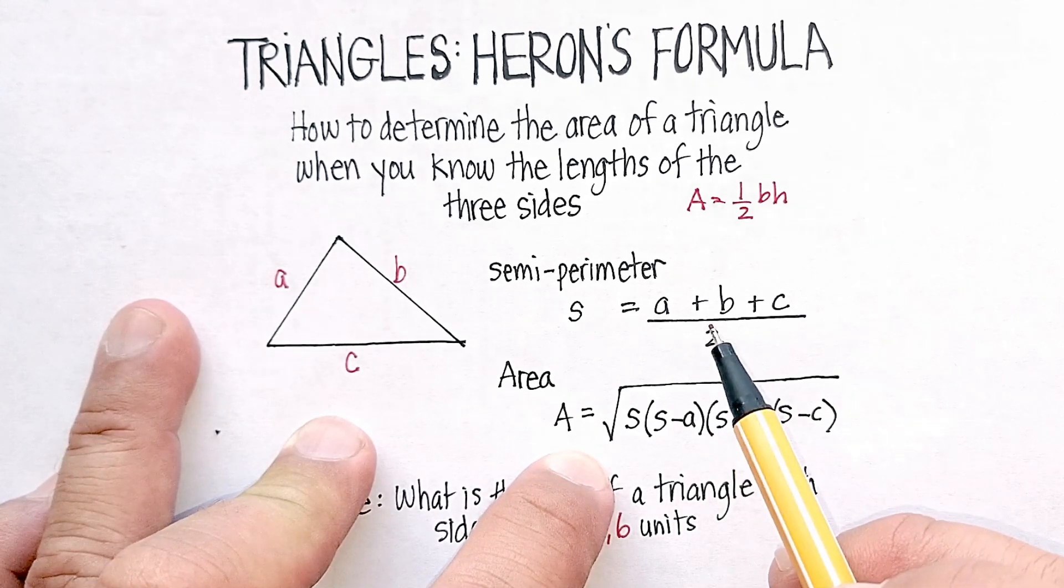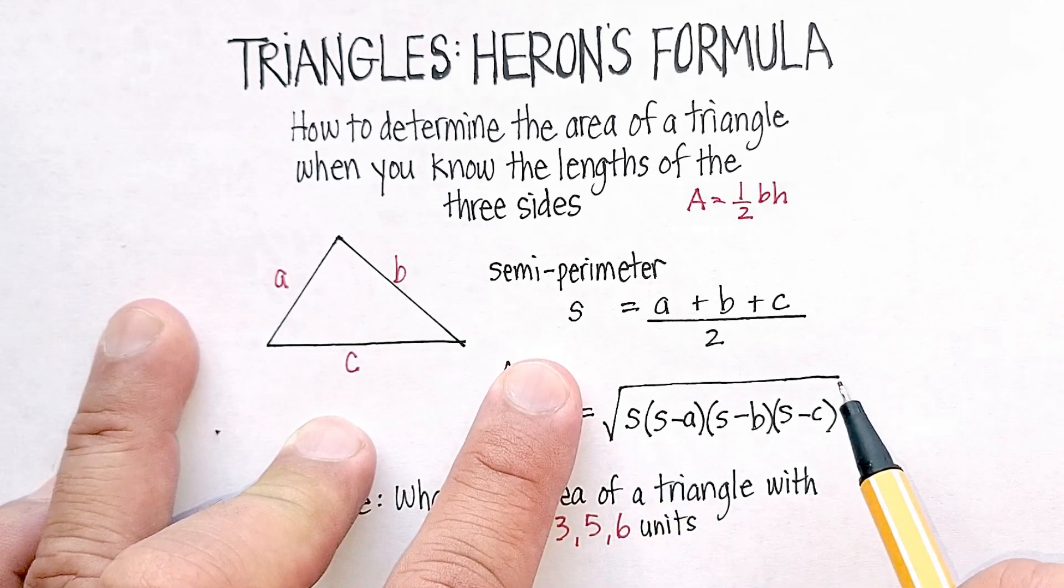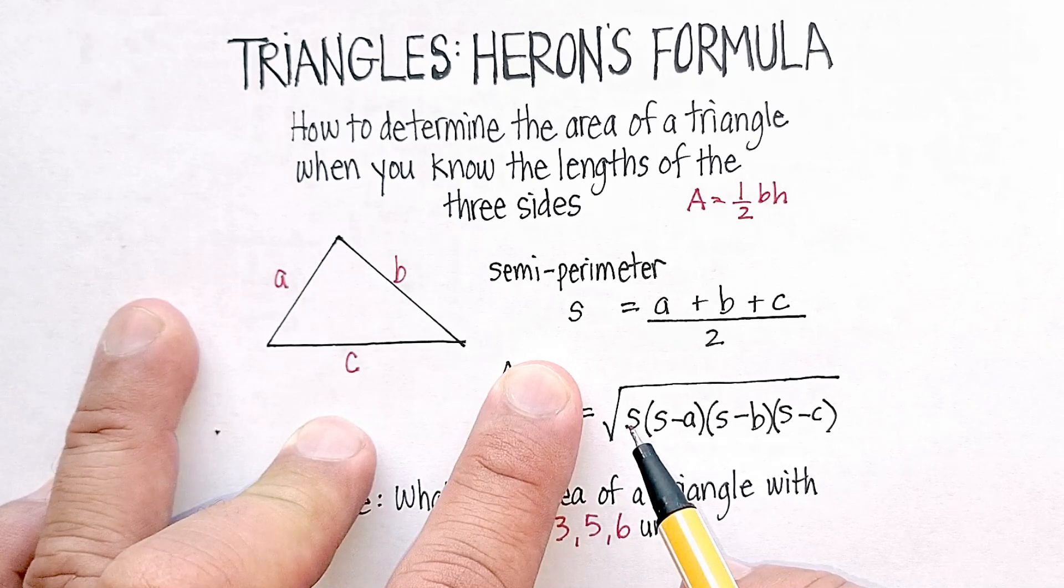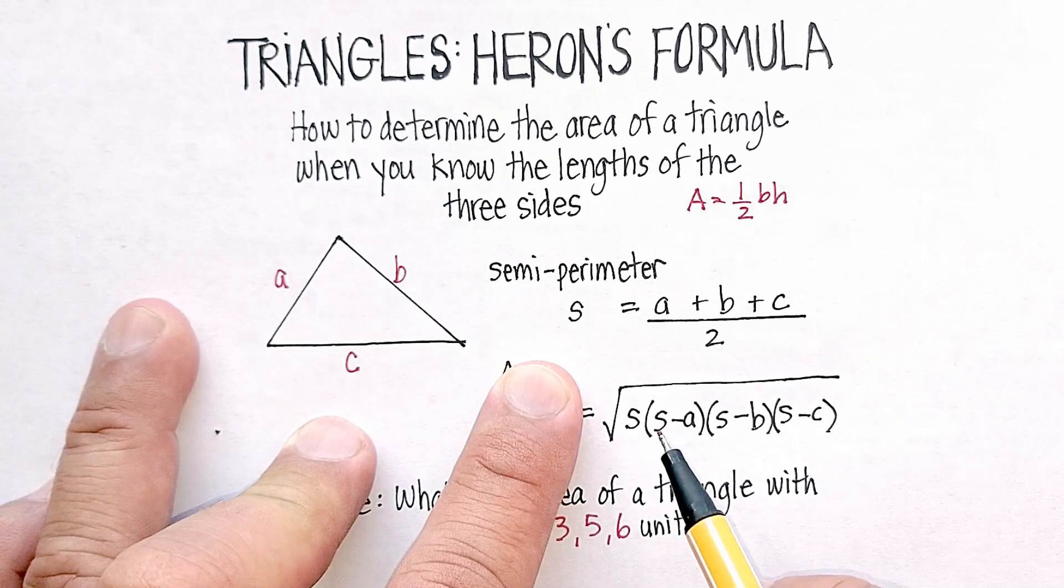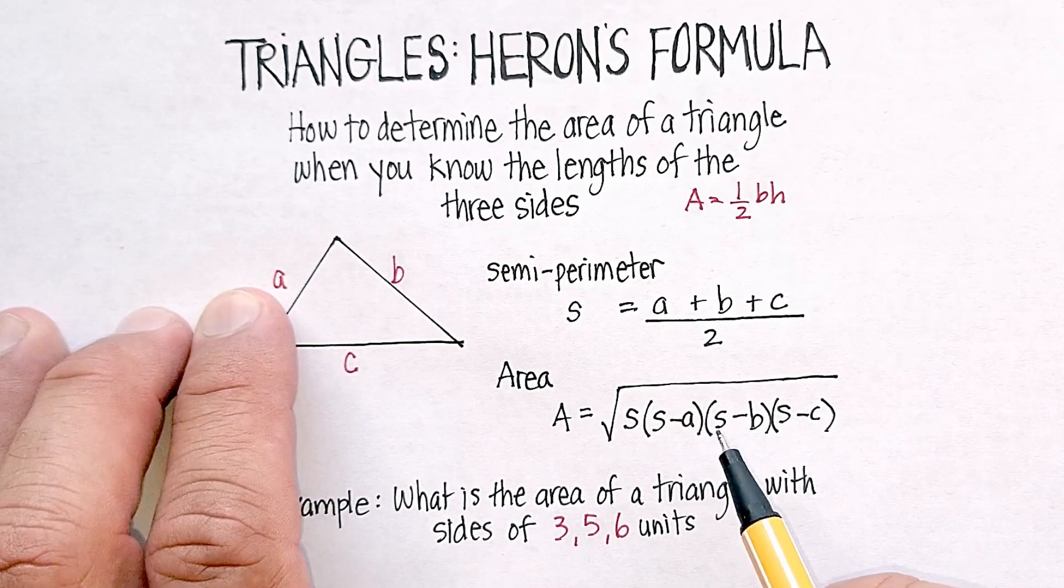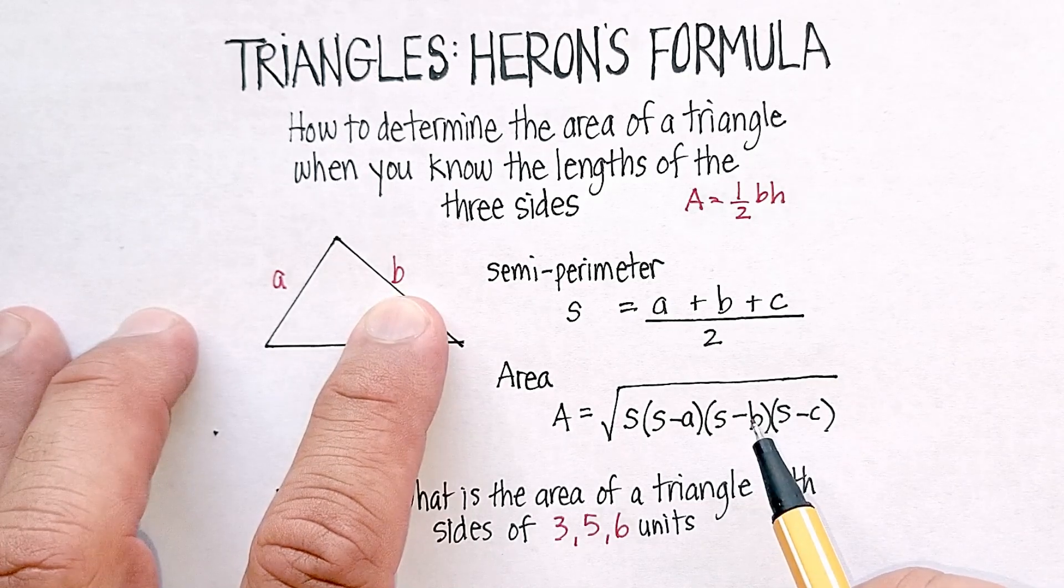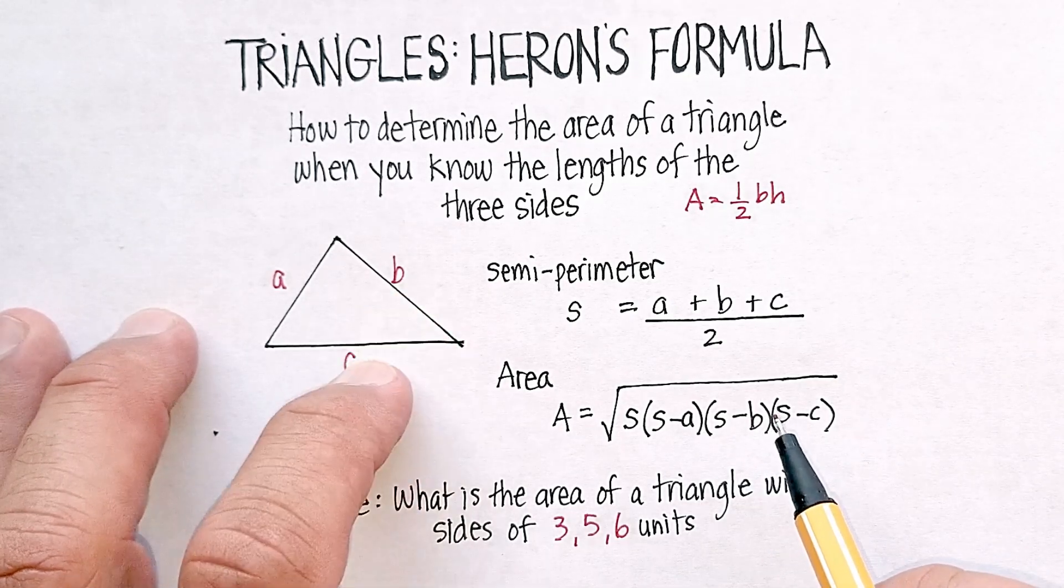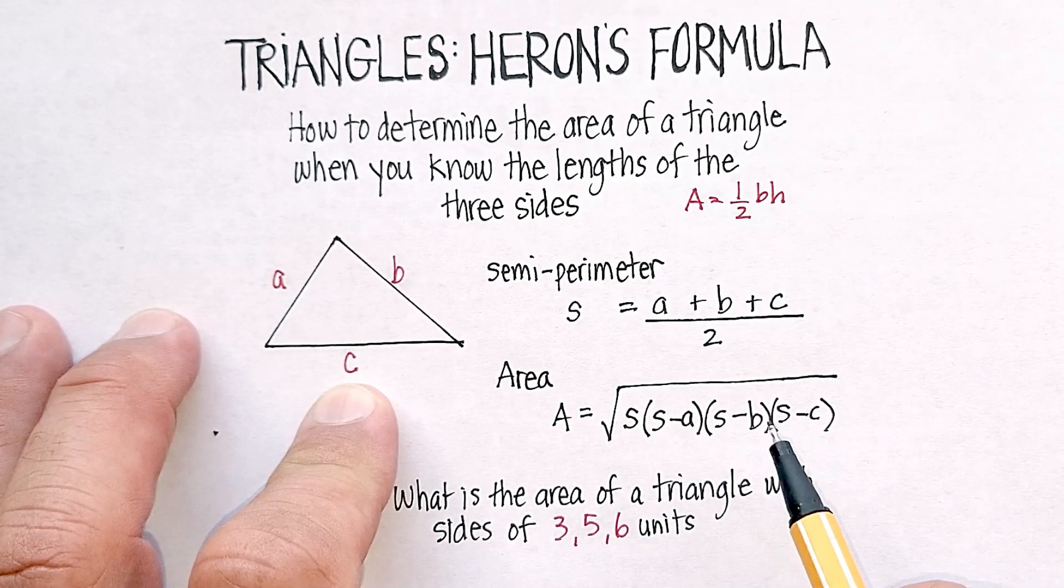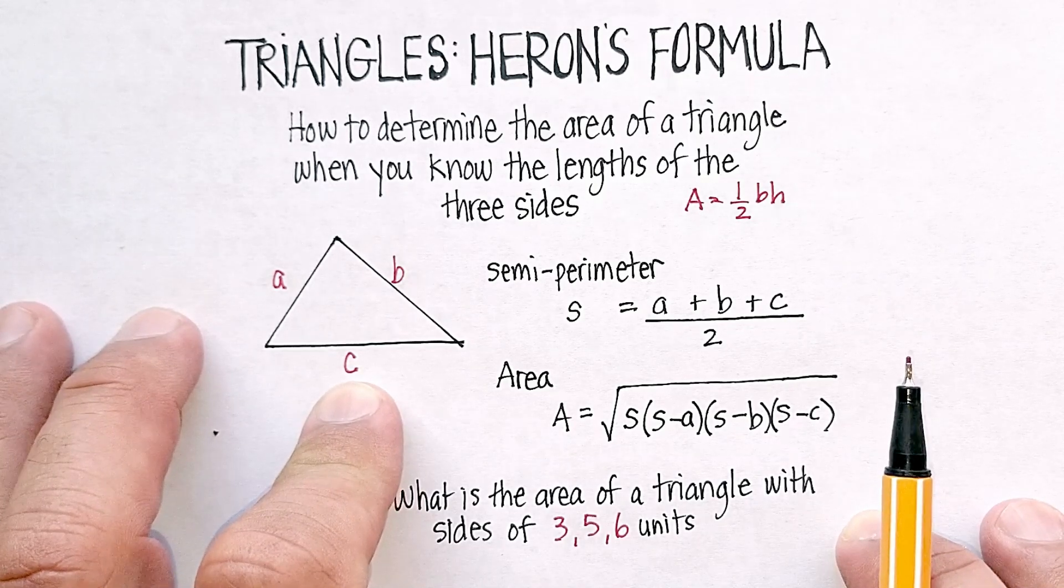Once you've done that, then you say that the area is equal to the square root of S, the semi-perimeter, times the quantity S minus side A times S minus B times S minus side C, all under the radical. And then that should give you the area of the triangle itself.